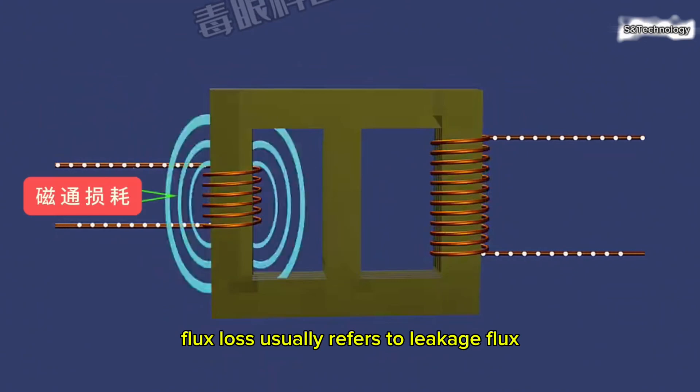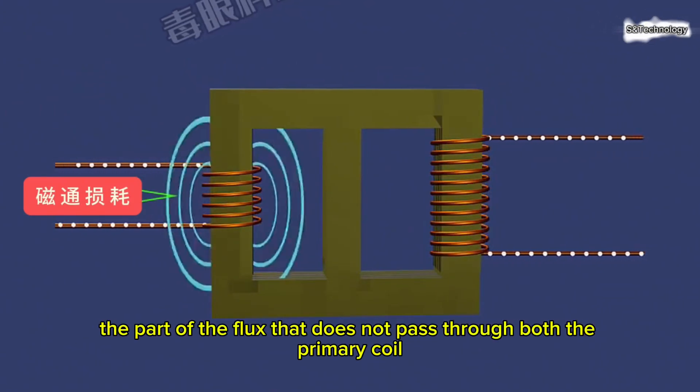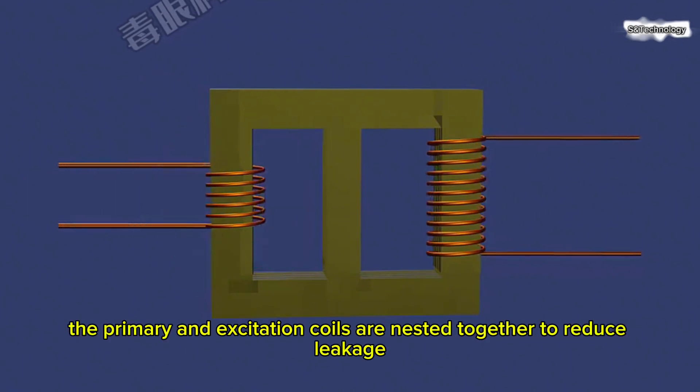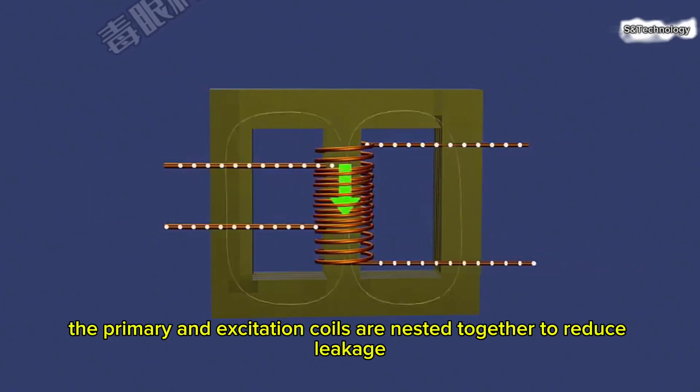Flux loss usually refers to leakage flux, which is the part of the flux that does not pass through both the primary coil and the secondary coil at the same time. The primary and secondary coils are nested together to reduce leakage flux.